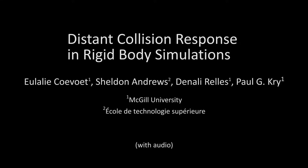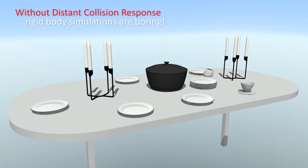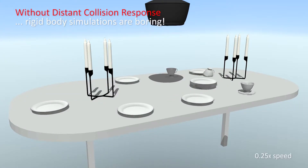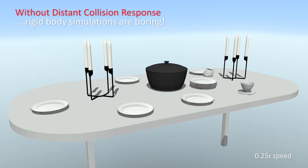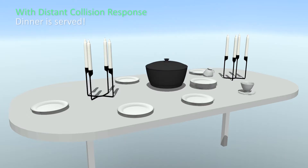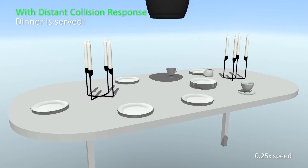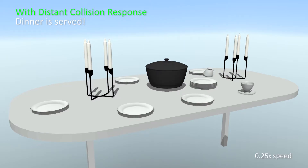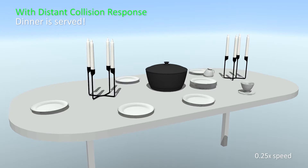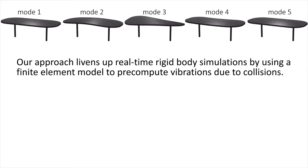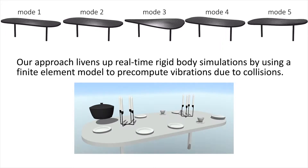We present a method for distant collision response in rigid body simulations. The simulation of rigid body impact ignores elastic properties of the real world except for a restitution coefficient to make objects bounce. We extend the standard approach to also include subtle secondary dynamics at distant contacts due to transient vibration effects. Our physically based approach uses finite elements and a reduced modal model to compute the vibration responses at distant contacts due to collisions.